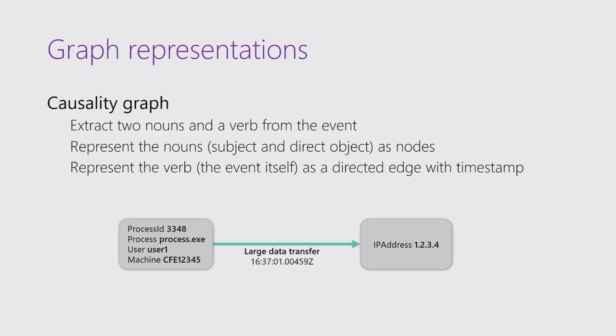You could say: I've got a machine or a process — that's a noun. It's doing a verb: it's sending traffic. And where is it sending it to? An IP address — noun, verb, noun; subject, verb, direct object. This is really useful for forensics, and this is where we started with graphs.